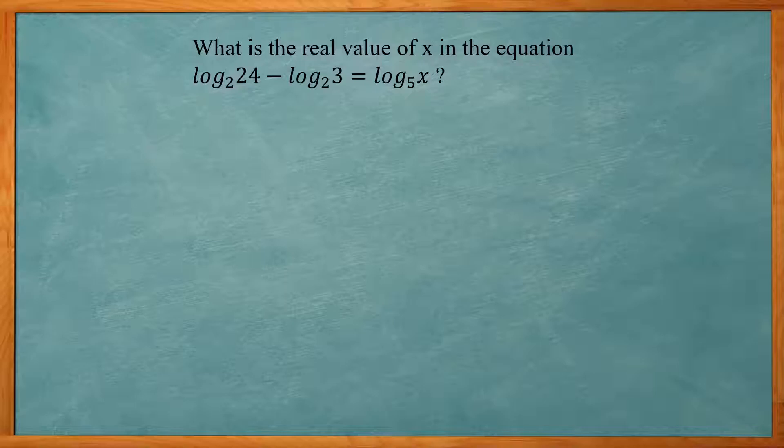We start out with the subtraction of two logs. When we have that with the same base, base 2, we can use the quotient rule, which is going to change this to log base 2 of 24 divided by 3 equals log base 5 of x.